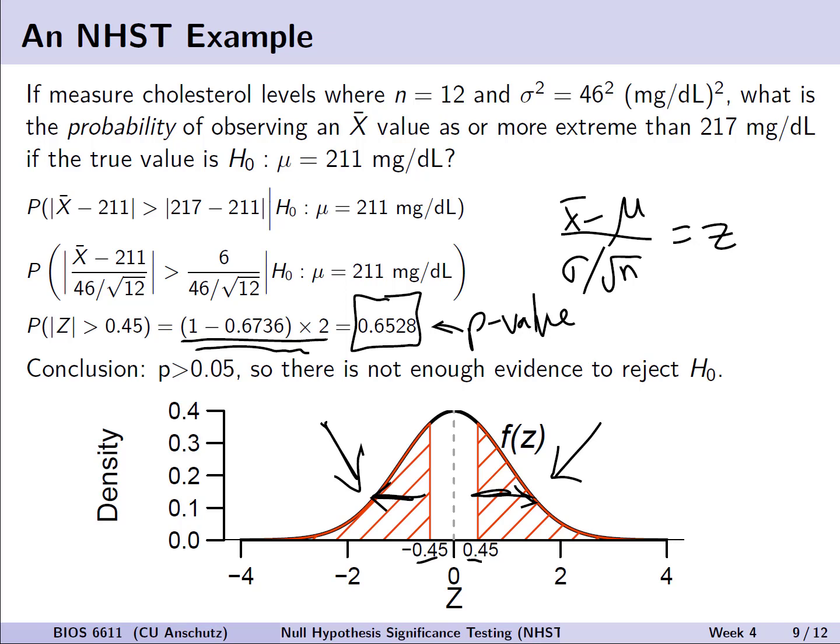What this equals then is our p-value right here of 0.6528. Now note, this is not the permutation distribution-based p-value that Fisher originally proposed, but it's based on the assumption of a sampling distribution being normally distributed and potentially calculating, as we'll see on the following slides, a critical region or a confidence interval. What we would conclude, though, is that this is a pretty large p-value since it's between 0 and 1, and therefore, since it's greater than 0.05, there's not enough evidence to reject the null hypothesis, so we can't conclude that our sample of 12 people and their cholesterol levels is significantly different than the true assumed population mean of 211 milligrams per deciliter.